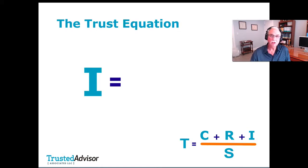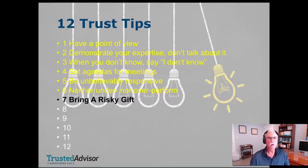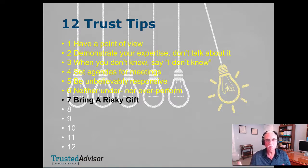The biggest factor, the most powerful one, is intimacy — and most people in advisory professions aren't great at it because we tend to be focused on subject matter mastery. Being secure and transparent has a lot to do with intimacy. One tip: bring a risky gift. Let me give you a metaphor. You get invited out to dinner with a couple you know from work. What do you do on the way? You stop and buy a nice bottle of wine.